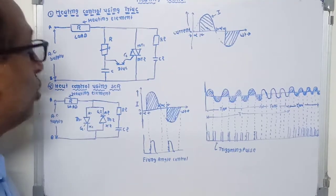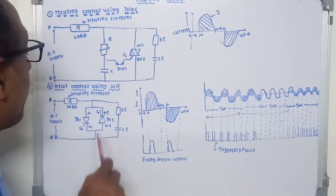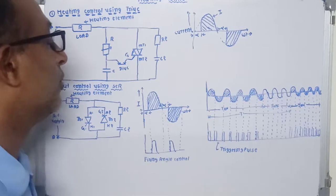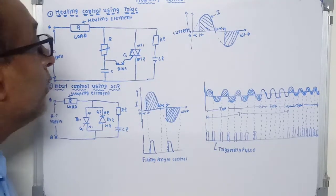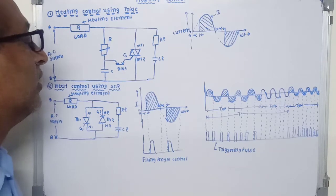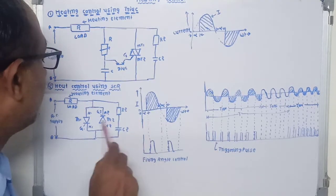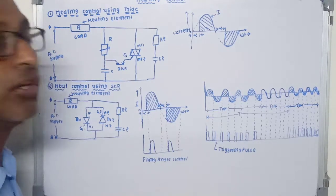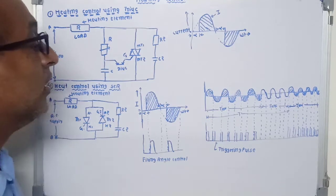There are two methods used for heating control with SCRs. In the first method, each SCR is triggered during both the positive and negative half cycles. The main disadvantage of this method is that the input power factor becomes very poor, especially when the firing angle is large. Thyristor TH1 is turned on during the positive half cycle and thyristor TH2 is turned on during the negative half cycle.